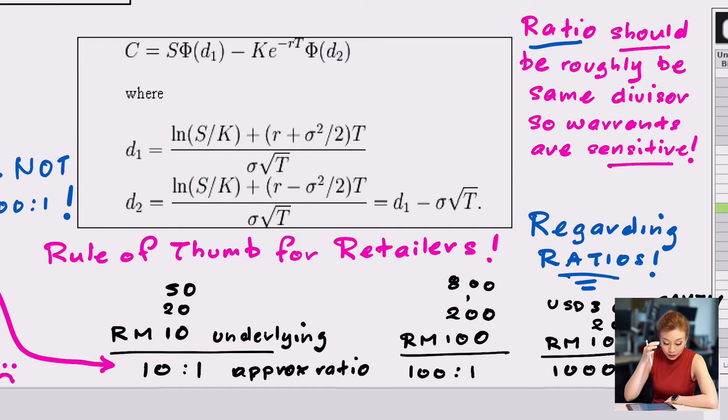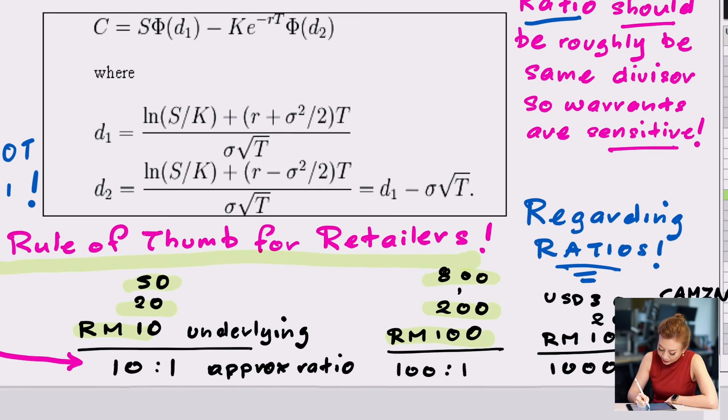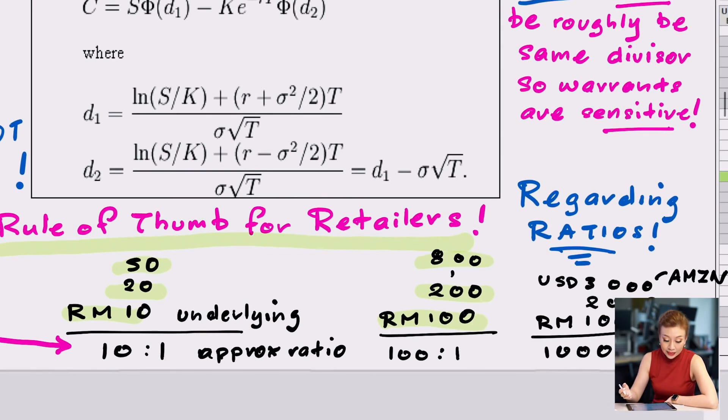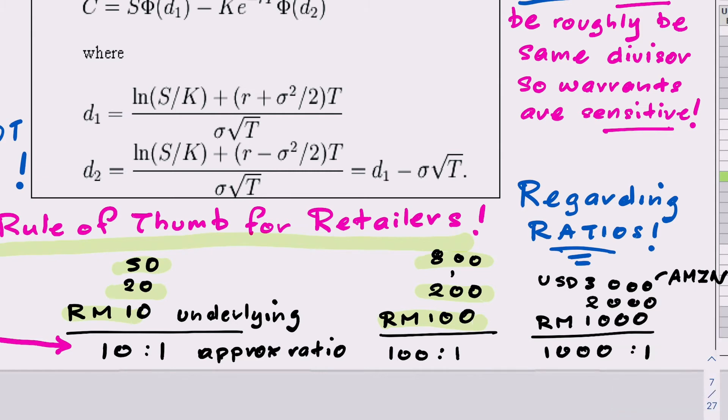A good rule of thumb to remember for retailers is this. So you have 10 to 1, for example, and the stock price can be RM 10, 20, 30, 40. If it's an exercise ratio of 100 to 1, then a rule of thumb would be the stock has to be RM 100, 200, 400, 600 or so. And that can be the price of the index. Then it's all right to have a few hundred exercise ratio.